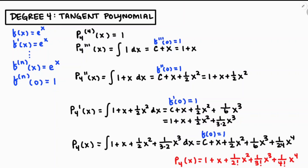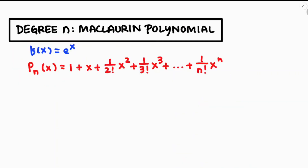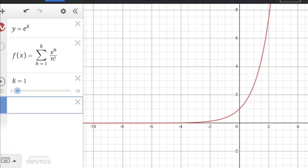If we went for a fifth-degree polynomial the next term would be x⁵/5!. In general, the nth-degree polynomial for e to the x is: 1 plus x plus x²/2! plus x³/3! all the way up to xⁿ/n!.